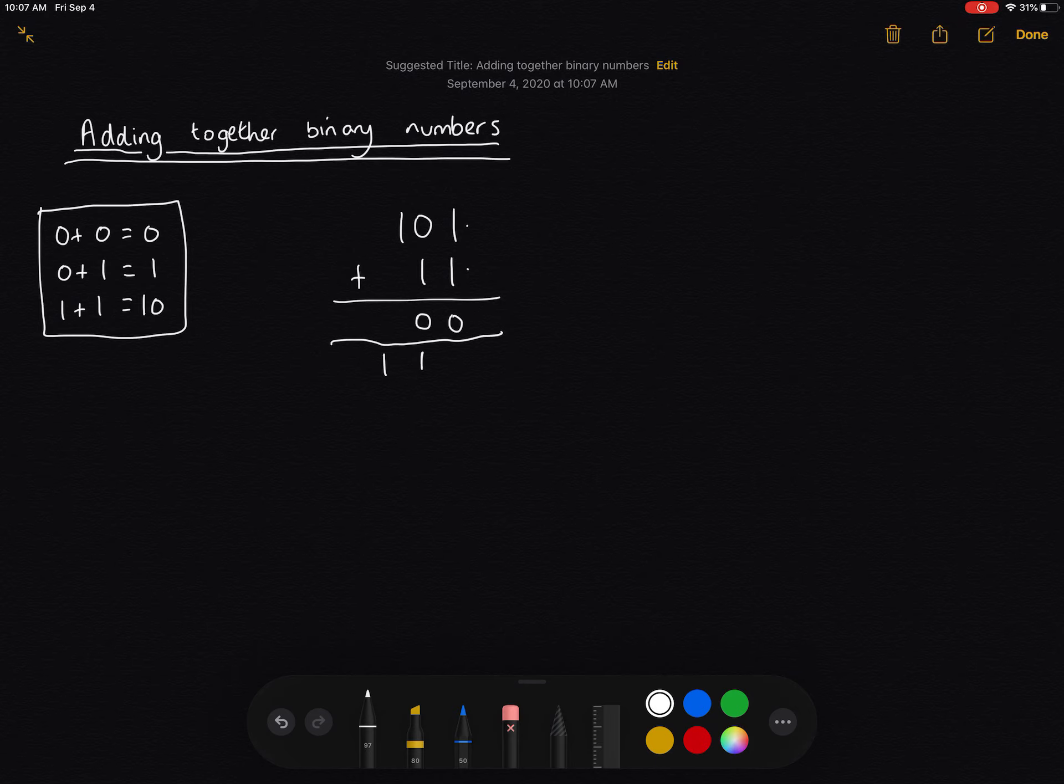Alright, so we're on the final column now. So we're going to do 1 and 1, which is we're going to write down 0 and carry the 1. Now this time it just goes at the front there.